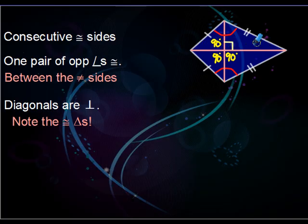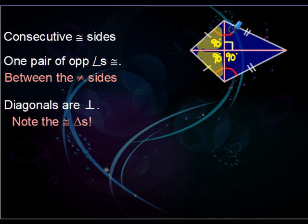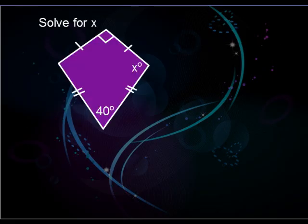Note the congruent triangles — it's not just that the whole top triangle is congruent to the whole bottom one. You should also see that this smaller triangle is congruent to the one underneath it, and the same applies to the larger triangle on the other side.